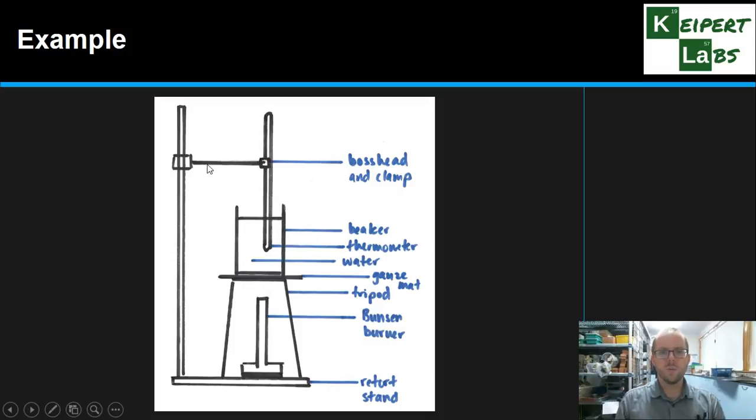And so we've got a retort stand. We've got a boss head and clamp connected to the retort stand and holding a thermometer which is putting there. We have a beaker which contains water, so you notice how the beaker here is open. Now this line here represents the water. It's the level of the water not the top of the beaker.